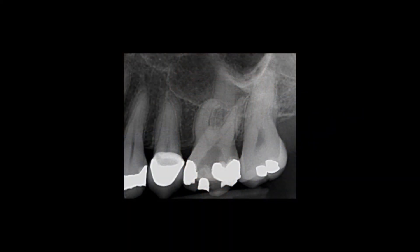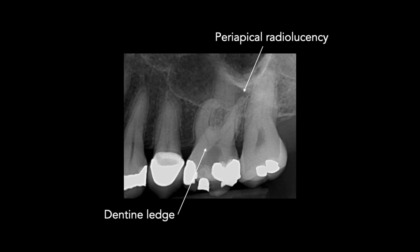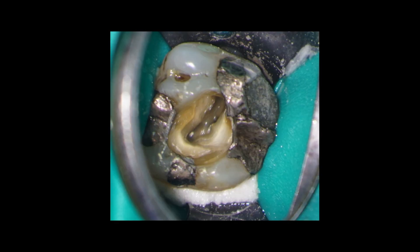On the pre-operative radiograph you can see the periapical radiolucency at the tip of the distobuccal root. You can also see the dentine ledges that are covering the orifices of the buccal canals. These will need to be removed in order to gain access to the root canal. Back to the microscope view and you can see these two ledges that will need to be removed.